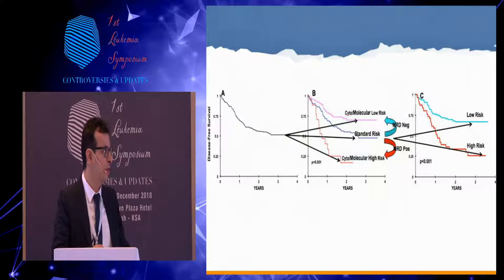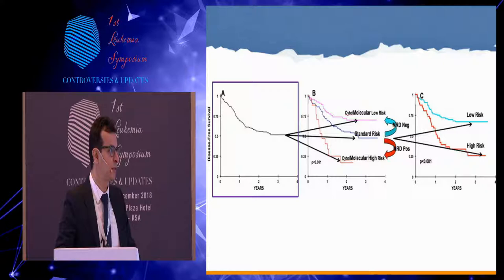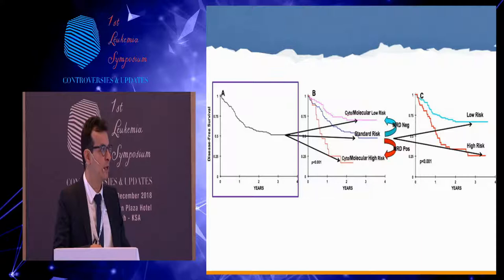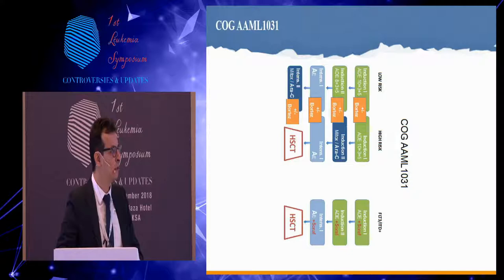Patients are risk-stratified with disease-free survival reaching 50 to 55%, subdivided into standard, low, or high risk based on cytogenetics. MRD is then used to further divide standard risk into low or high risk. The most recent trial, AAML1031, has a low and high risk group. There is a specific arm for FLT3 using sorafenib, for which we are awaiting results. Stem cell transplantation is used mainly for the high-risk group.